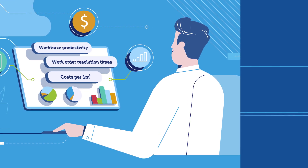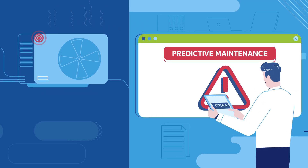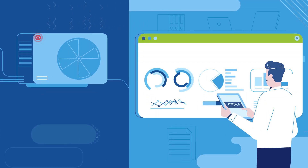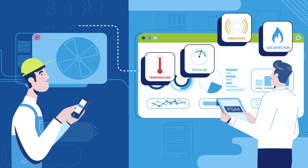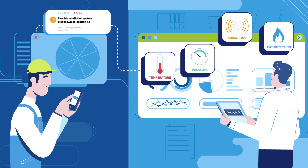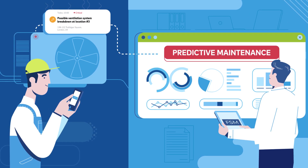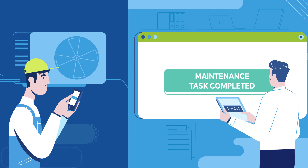Monitor your equipment by installing Comarch smart sensors. By measuring various parameters, the system will predict possible issues, generate maintenance alerts, and enable you to prevent costly repairs.